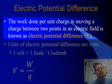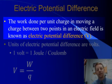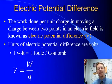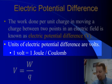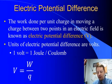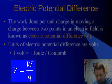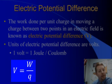The work done per unit charge in moving a charge between two points in an electric field is known as the electric potential difference, and we give that the symbol capital V. The units of electric potential difference are probably familiar to you — we know those as volts. One volt is equal to one joule per coulomb of charge. We can relate these using the formula: V equals the work done, or electric potential energy, divided by the charge in coulombs.